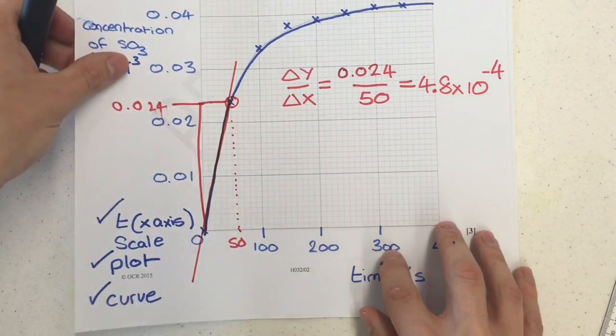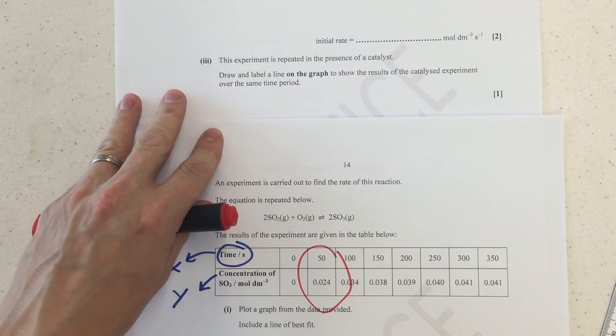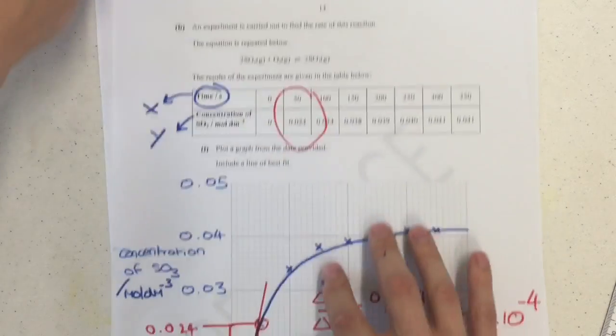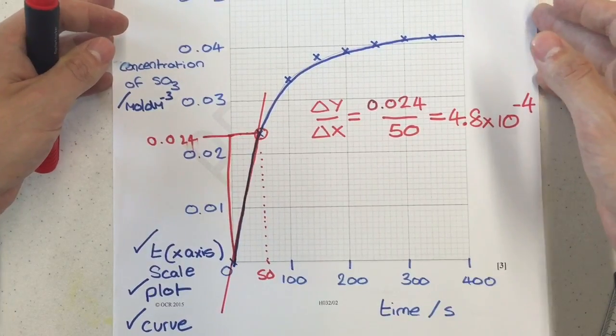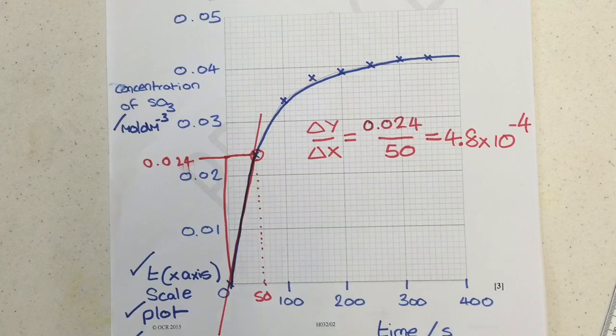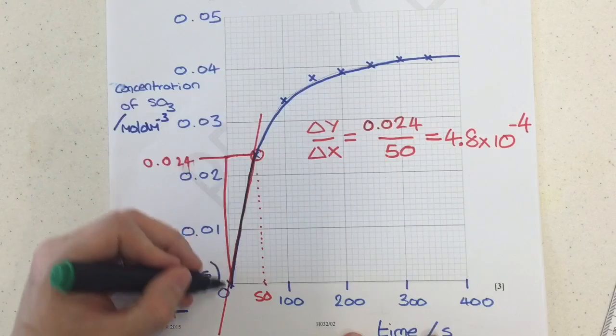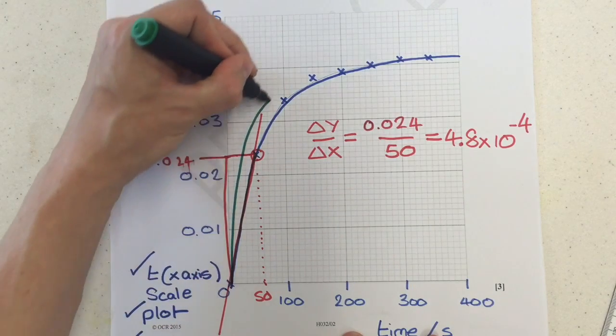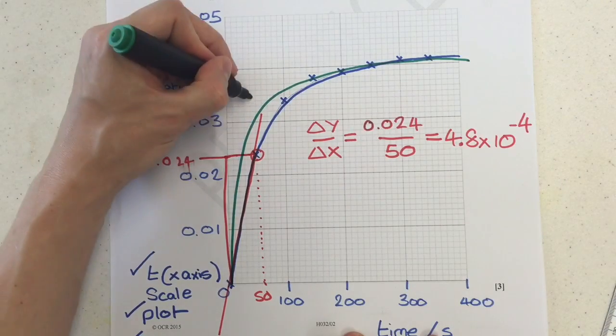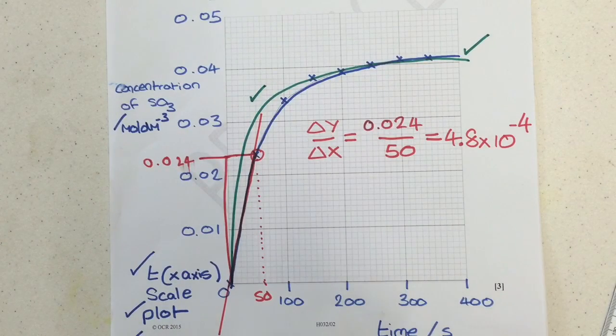Okay, so our next bit. This experiment is repeated in the presence of a catalyst. Draw and label a line on the graph to show the results of the catalyzed experiments over the same time period. I'm going to draw this one in green. When we add a catalyst, we increase the rate of reaction, but we don't change the number of moles or the concentration of anything that's made at the end. So we need to make sure our gradient is steeper, but that we end at the same point. You can see I've got the gradient of the line is steeper, which would be part of the mark. And it ends at the same point, which is the second part of the mark.